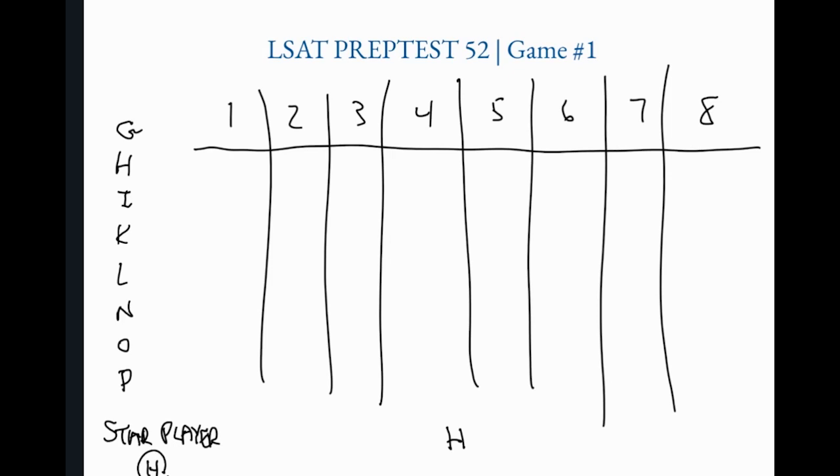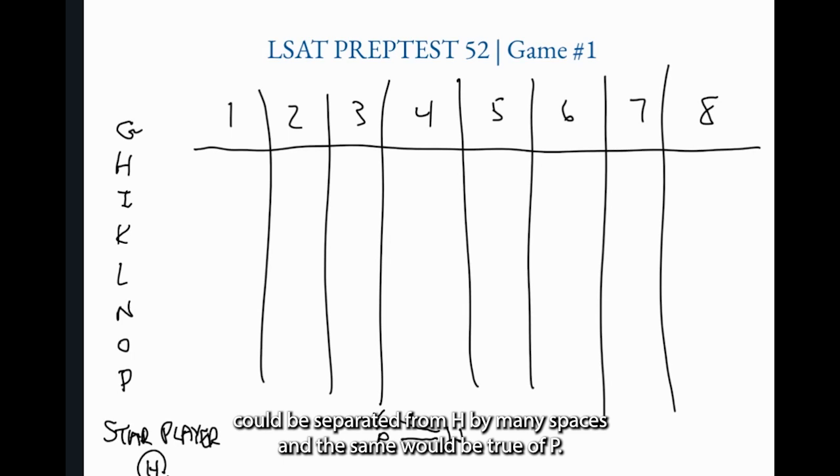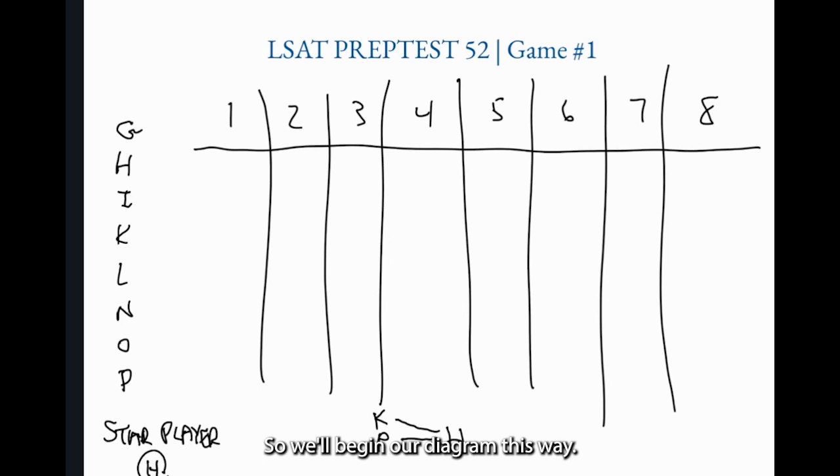The first rule says that both K and P are before it. Now what we'll do is we'll generally use horizontal lines to indicate sequence but also indefiniteness meaning we don't know how long the space is. K could be immediately in front of H or K could be separated from H by many spaces and the same would be true of P. So we'll begin our diagram this way.